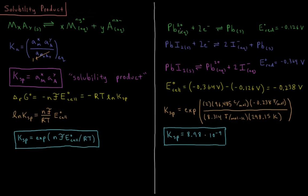Our anode is going to be the reverse of this reaction. Standard reduction potential of negative 0.126 volts. So the standard EMF of the cell for our net reaction is going to be negative 0.364 volts minus negative 0.126 volts, giving us a standard EMF of the cell of negative 0.238 volts.